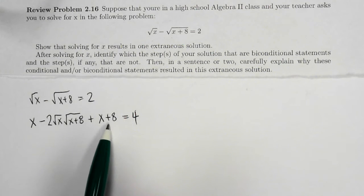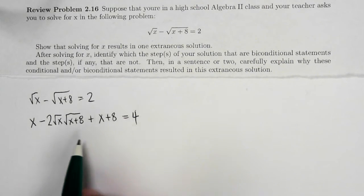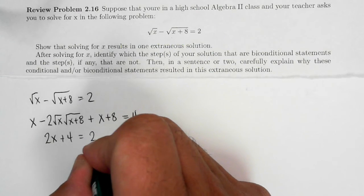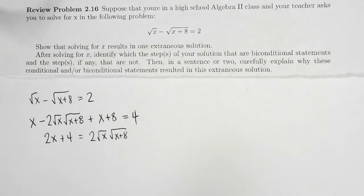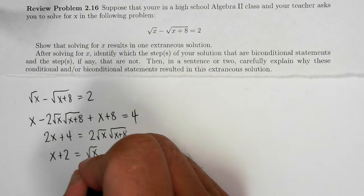Now next I'm going to put everything that has a square root on one side, everything that doesn't have a square root on the other side. So that's going to be 2x plus 4 is equal to 2 times the square root of x times the square root of x plus 8. And for this one I can divide by 2 to make my life a little bit easier.